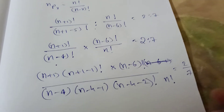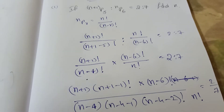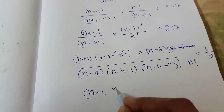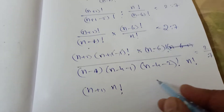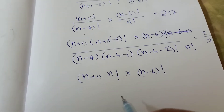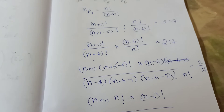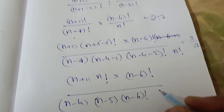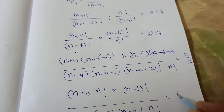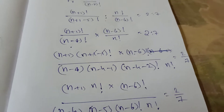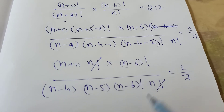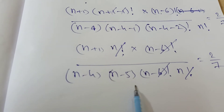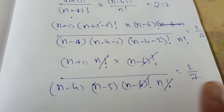After cancellation: (n+1) times n factorial times (n minus 6) factorial divided by (n minus 4)(n minus 5)(n minus 6) factorial times n factorial equals 2 by 7. Cancel n factorial and (n minus 6) factorial. What remains is (n+1) divided by (n minus 4)(n minus 5) equals 2 by 7.